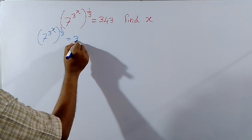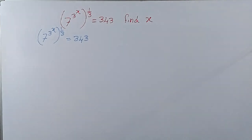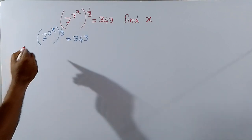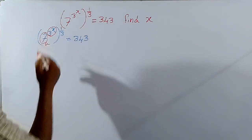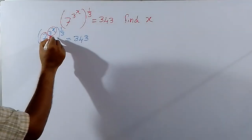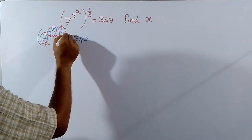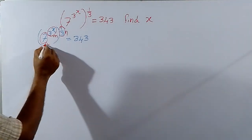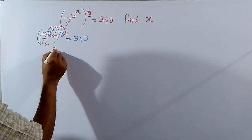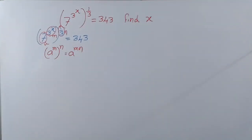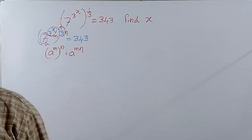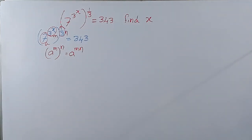So what is given? The question: 7 power 3 power x whole power 1 by 3 equal to 343. In this exponents, this is a, this is b, this is m, and this is n. Now that is in the form of a power m whole power n. The formula is a power m whole power n is equal to a power m into n.